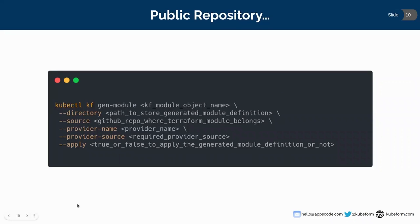QFIRM module supports both public and private git repositories to refer to as a Terraform module definition. You can give your public or even private repository during the generation of QFIRM module definition. We will see both commands — how to generate from public git repositories and also from private repositories.